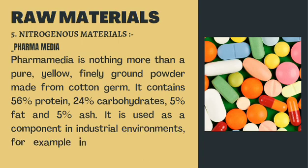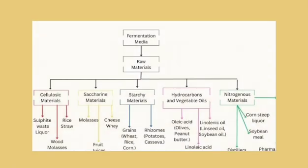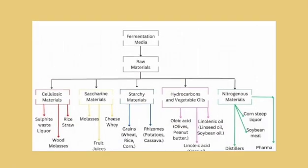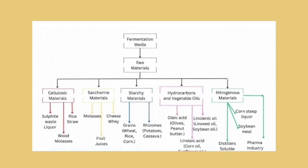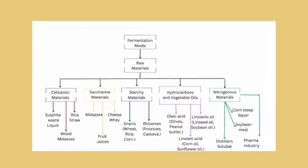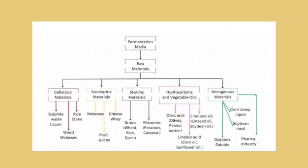Now let's take a few seconds to observe this flowchart. All the topics discussed so far — saccharine materials, starchy materials, cellulosic materials, hydrocarbons, vegetable oils and nitrogenous materials — are all summarized in this flowchart.